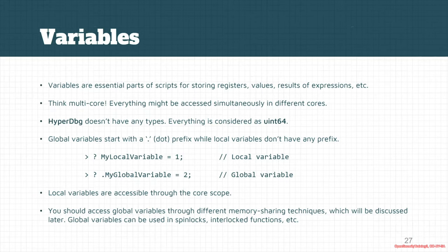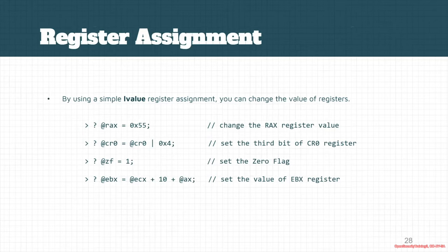We have some interlocked or spinlock functions that you can use to access a global variable and share a variable between these cores. We'll discuss about it later. This is an example of L-value register assignment. We saw some examples from it in the previous slides, but here's a complete explanation.